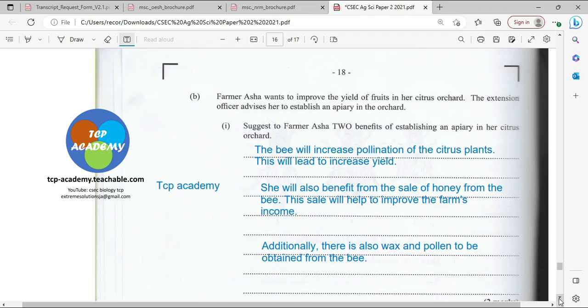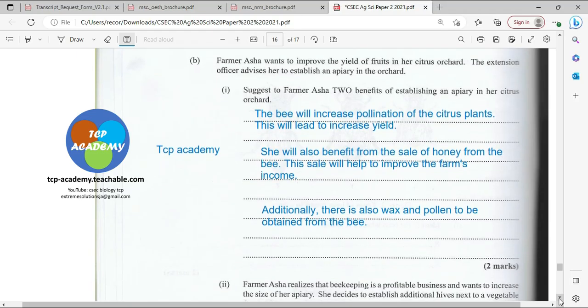Another benefit is that Farmer Asha will be reaping honey, harvesting honey, and this of course will improve farm income. So we're talking about two benefits: honey as food and pollination for income. Then there's also the wax harvested from the bee or from the apiary, the pollen that we can harvest, and also royal jelly. So a whole lot can benefit Farmer Asha. However, your exam only asks for two. Make sure in your exam you answer for only two.